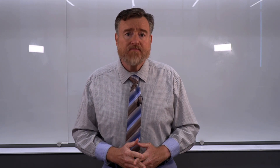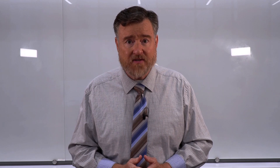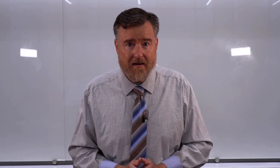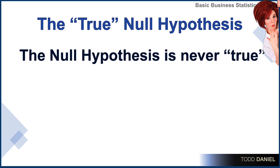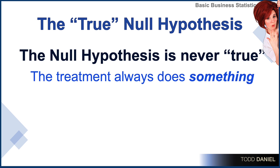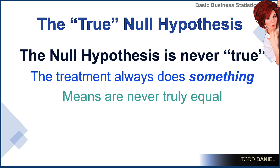It's highly unlikely — less than five times in a hundred would that occur by chance if the null hypothesis was true. And here's the problem: the null hypothesis is never true. The null hypothesis tells us that there is no difference between the sample mean and the population mean, and yet when we do a treatment, that treatment always does something, even if it's minimal. Whenever we measure two means, the sample mean and the population mean are never truly equal.